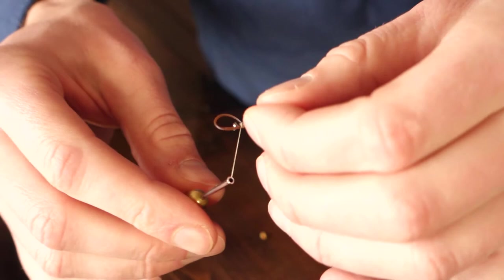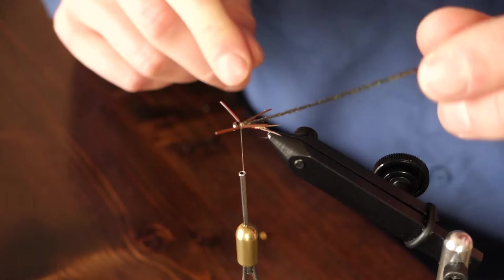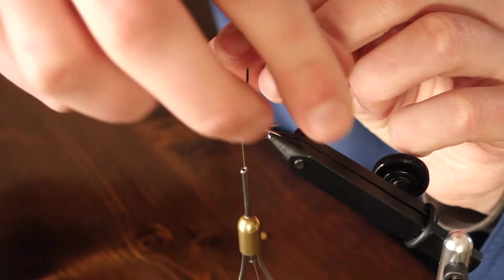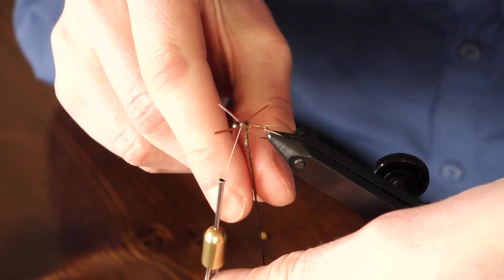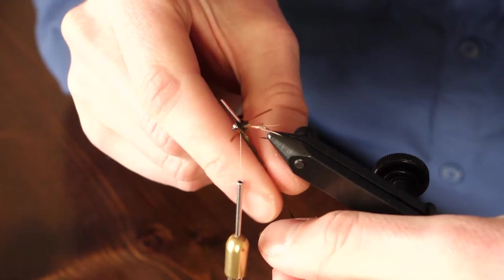Once I've got the rubber legs positioned how I want them, I'll cut that front loop and the legs pop out just like that. Now I'm going to take my peacock hurl and make one wrap behind the rear set of legs. Then I'm going to come up between them to build this thorax up. This will also help cover up our thread wraps. Then I'm going to go in front of both of the legs and make a couple more wraps before I tie off the peacock hurl.